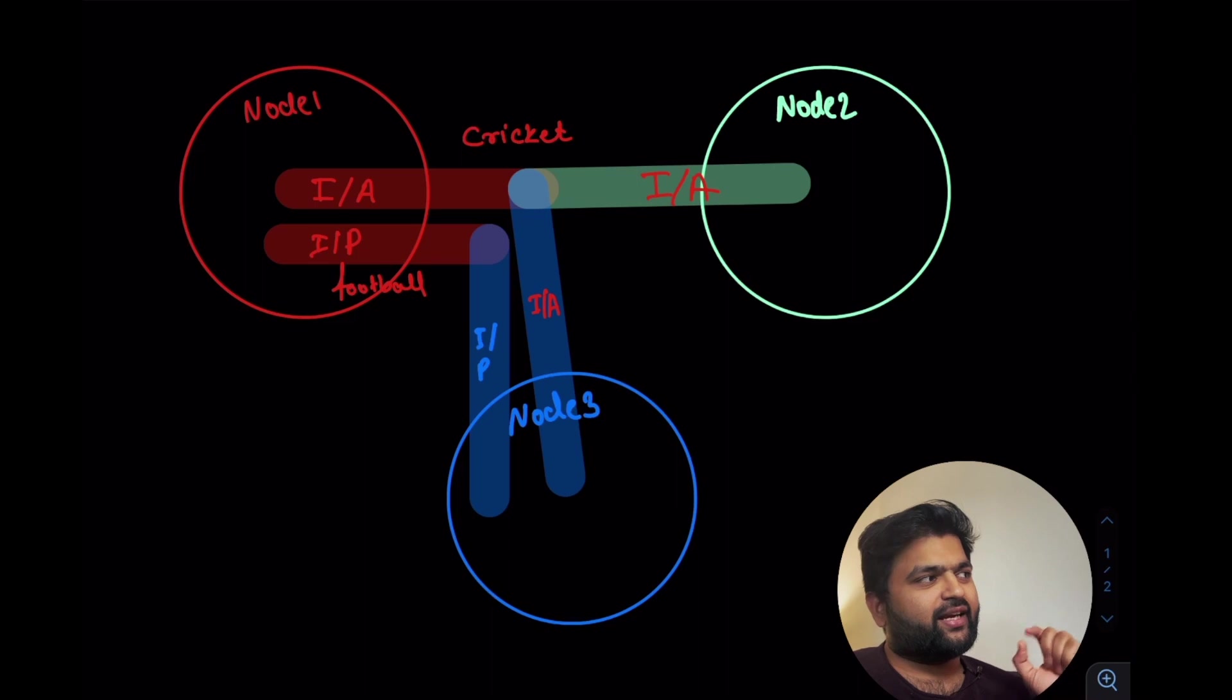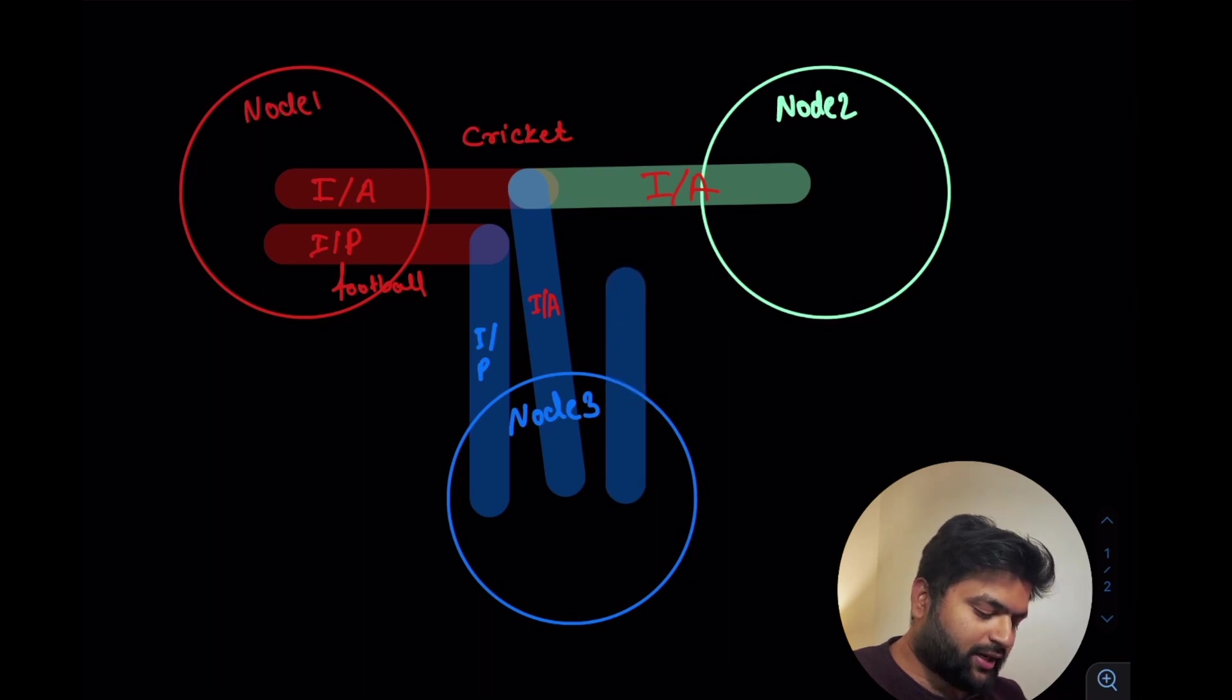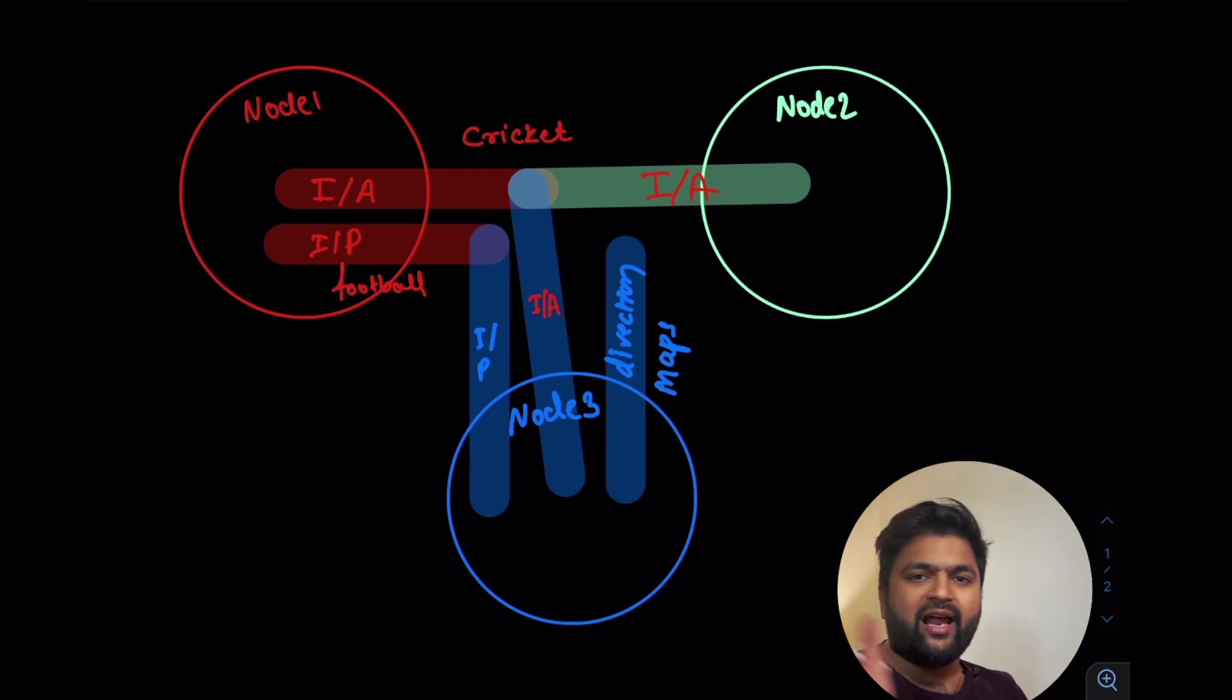After this event all of them went ahead but what happened was node 1's phone got discharged and there was no way to know the map, where they were going, where they want to go and where not. But node 3 had a physical map in front of him. Now node 3 has one information that node 1 and node 2 need. So my node 3 will publish a topic and the topic could be maps, and the message inside that topic is directions - where to go, left, right, straight, whatever.